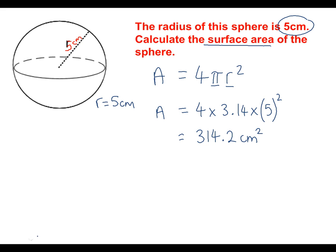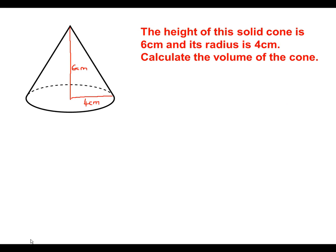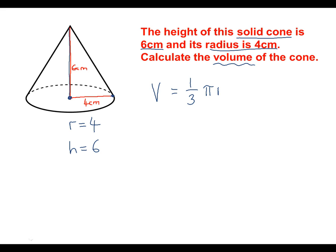Now we've done a sphere, we're going to move on to a cone. Here's our next question. The height of this solid cone is 6 centimetres and its radius is 4 centimetres. Calculate the volume of the cone. The radius is the distance between the middle of the circle at the bottom and the edge, so radius is 4. The height is the distance from the middle of the circle to the top in a straight line, so the height is 6. The formula for the volume of a cone is 1/3 π r² h — we don't need to remember this, we can look it up at the front of the exam paper.